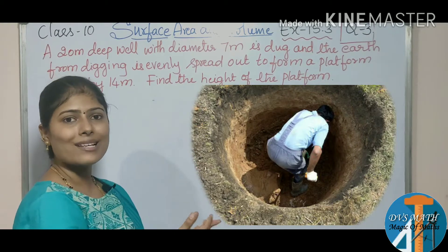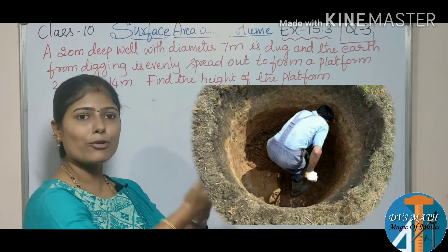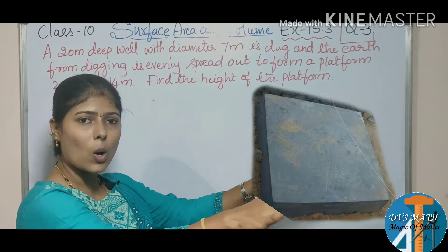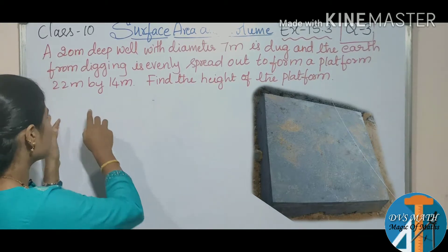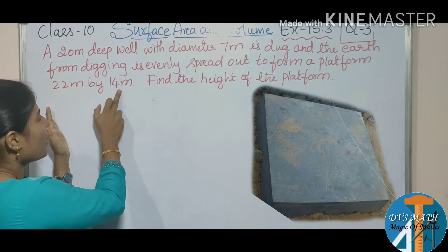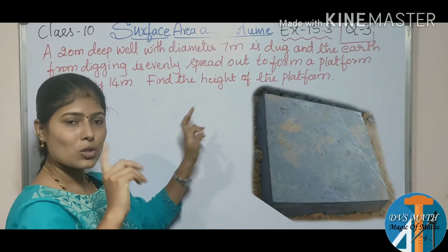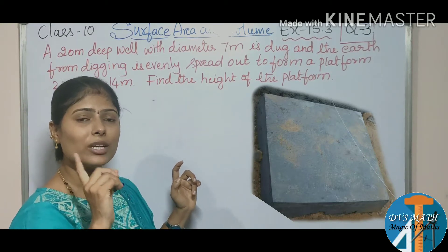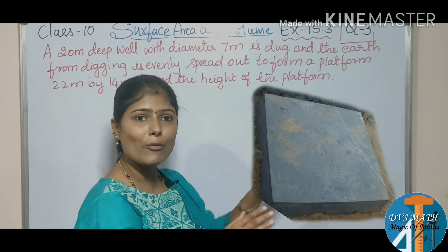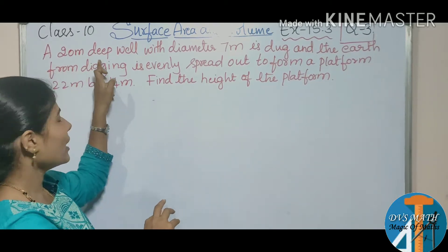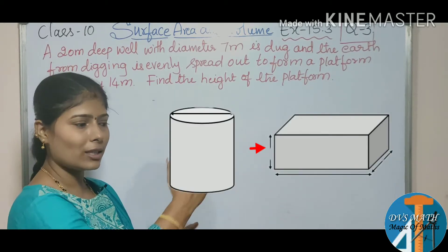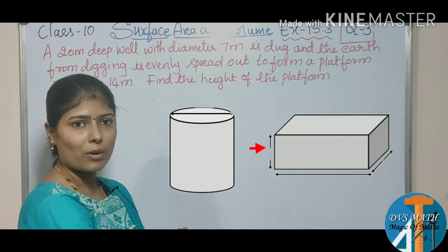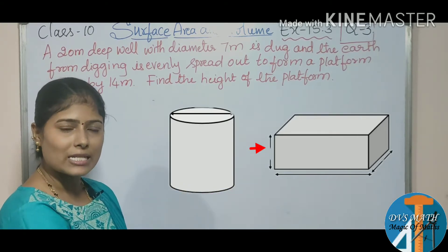The earth or soil obtained after digging is spread in the form of a platform. They have given 22 meters by 14 meters, and we need to find the height. Length, breadth, and height — the platform can be considered as a cuboid shape. So the well is in the form of a cylinder and the soil is spread in the form of a cuboid platform. Therefore, volume of cylinder equals volume of cuboid.